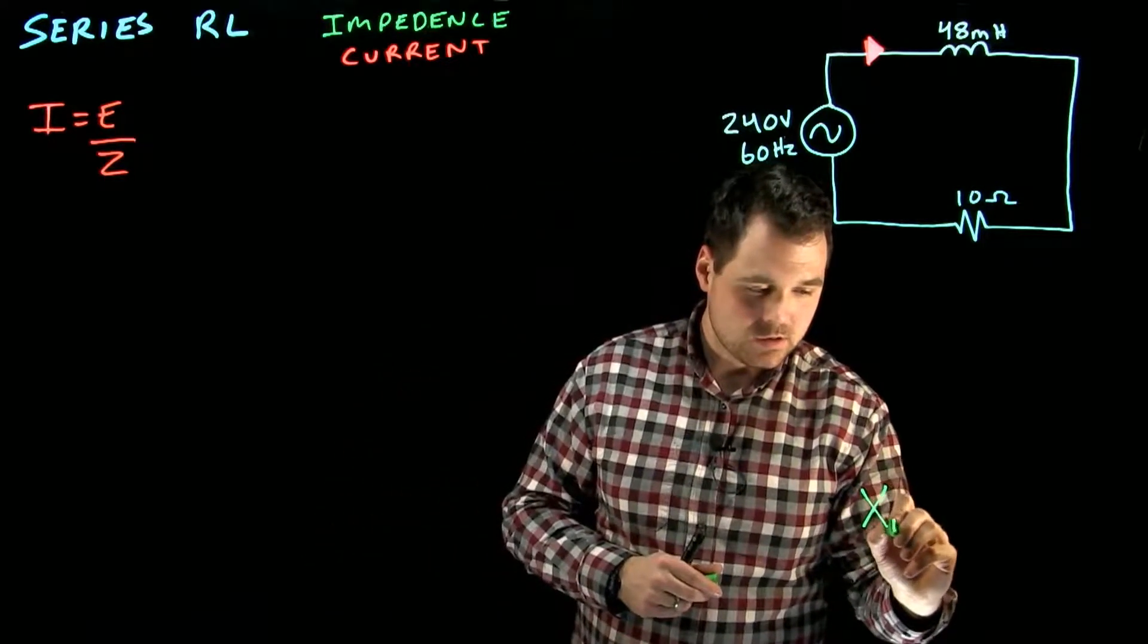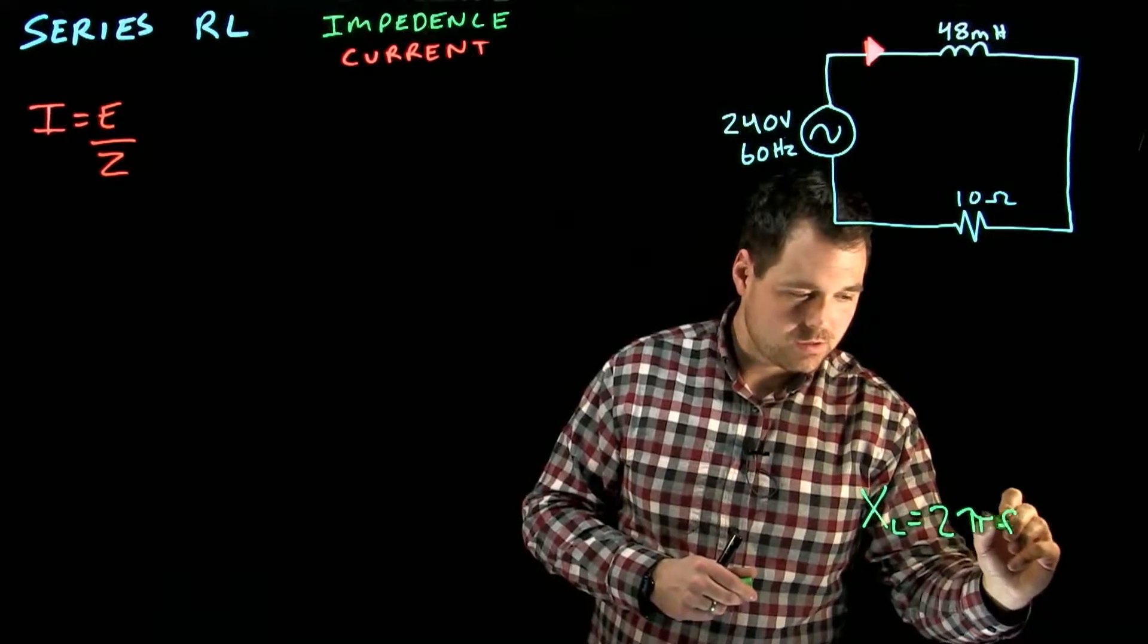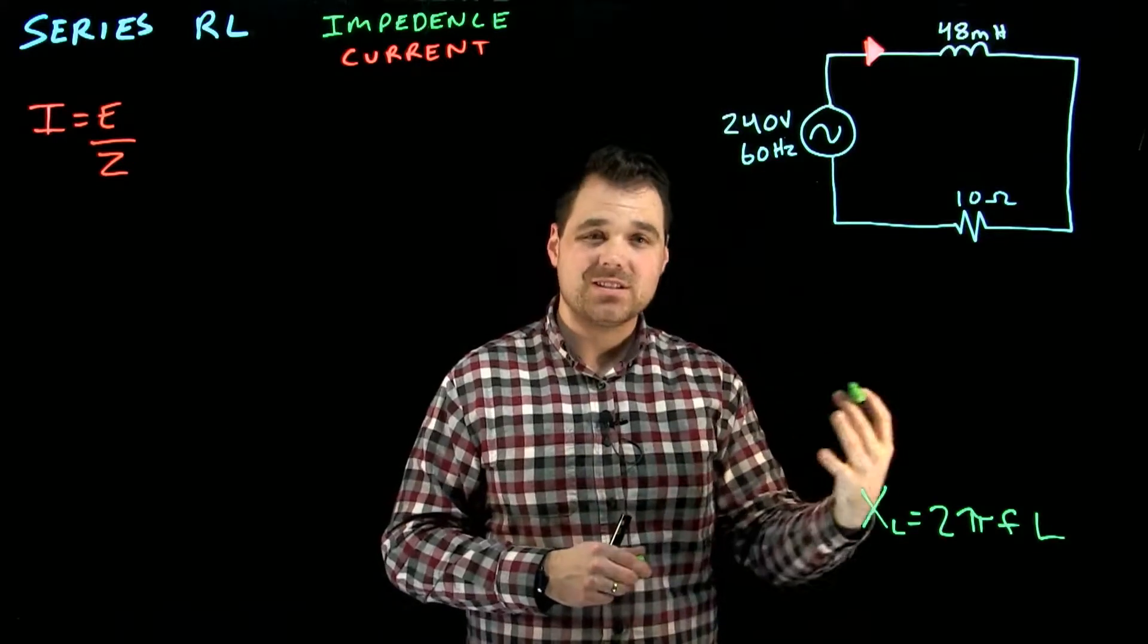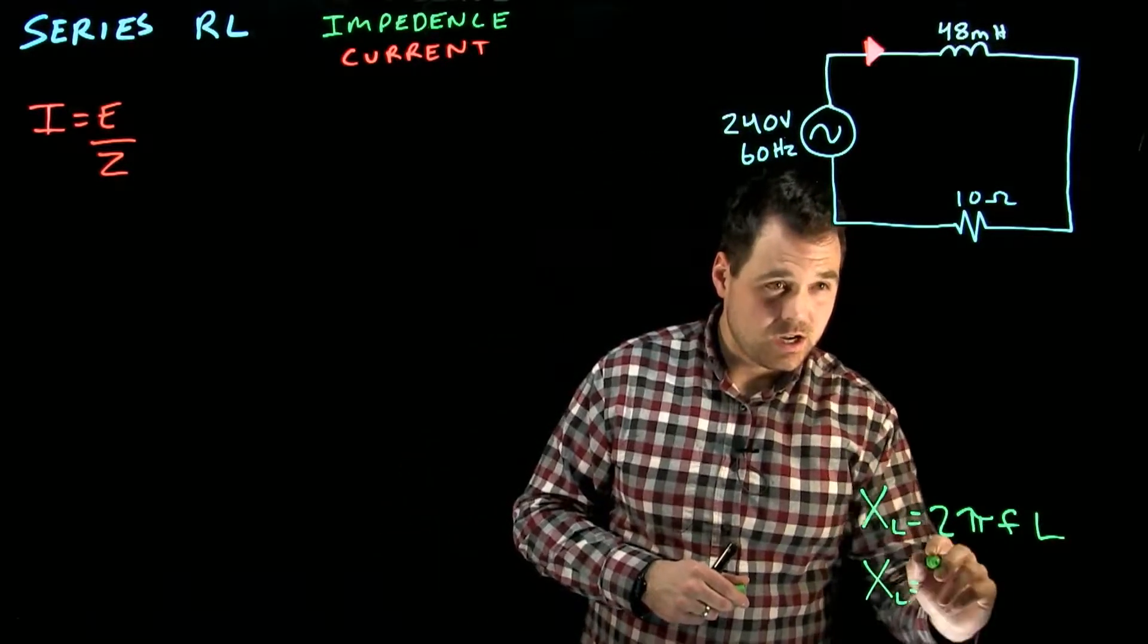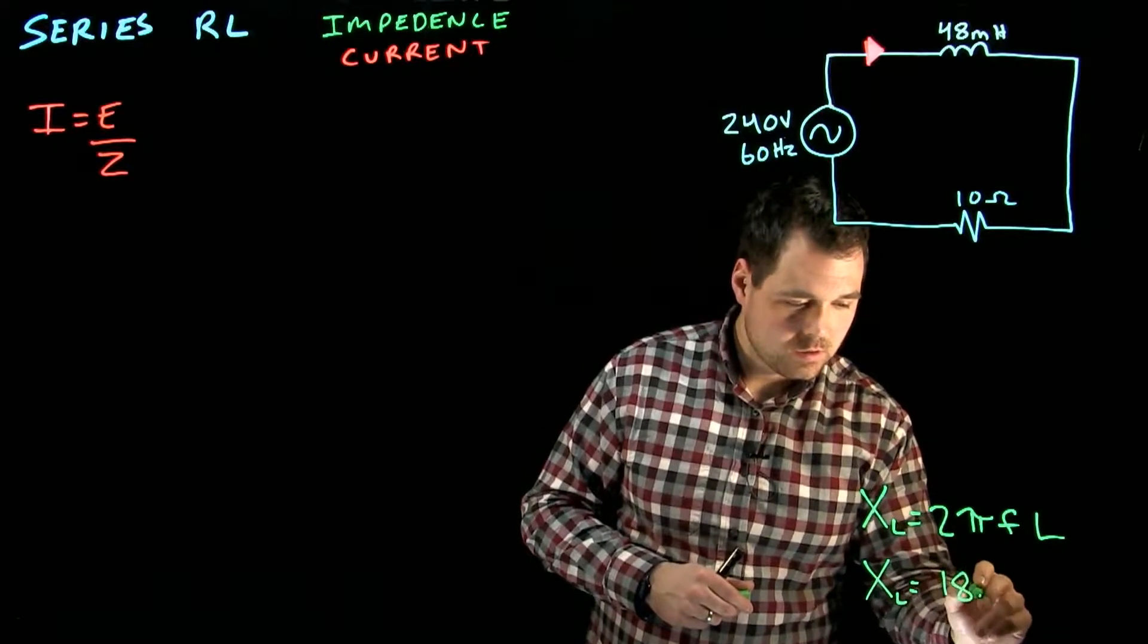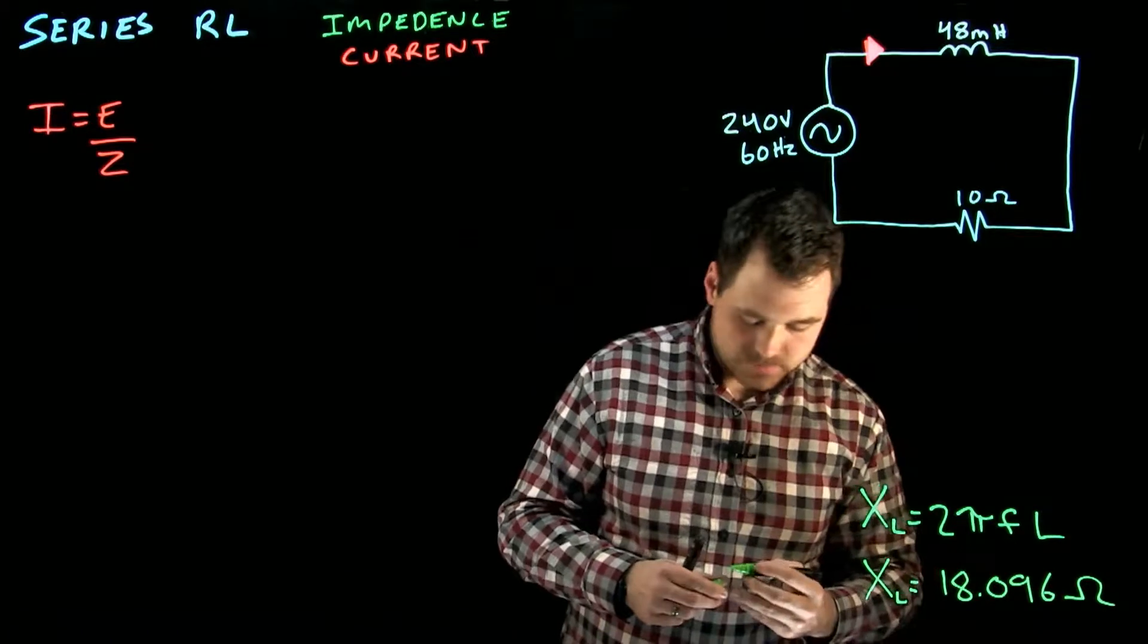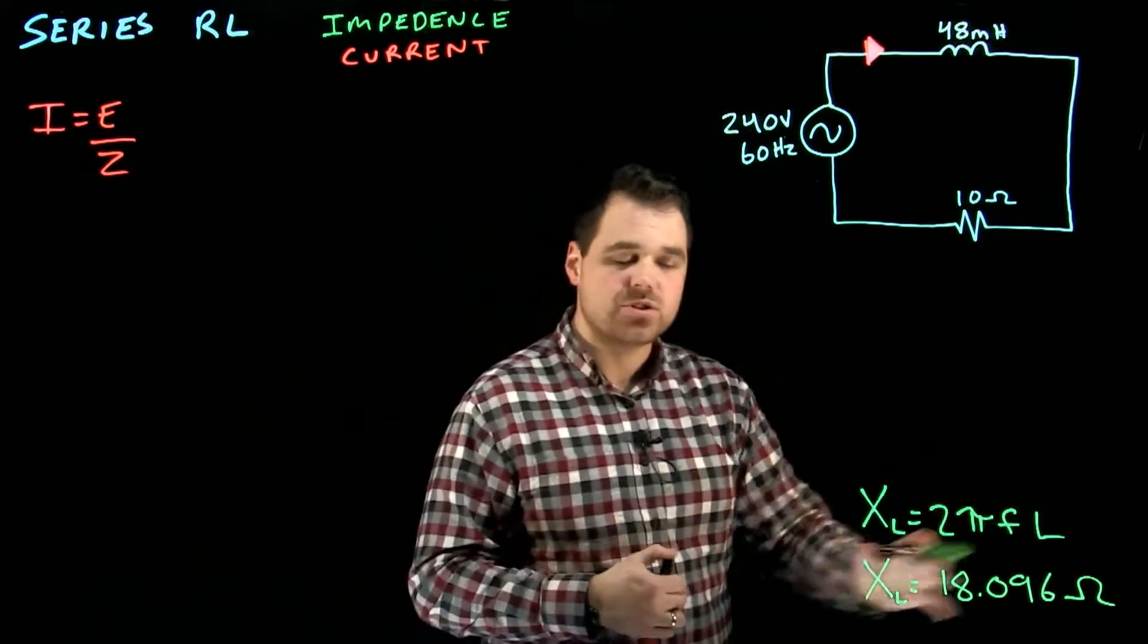I'm going to go XL equals 2 pi frequency times inductance. Remember to turn this into Henry's instead of millihenry's. And in this case, we get an XL of 18.096 ohms. So that's the ohmic value due to inductive reactants in this circuit.